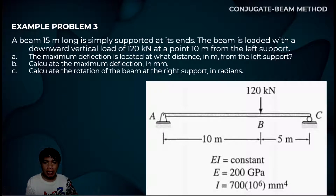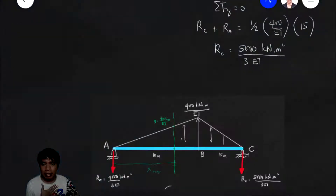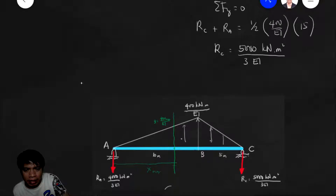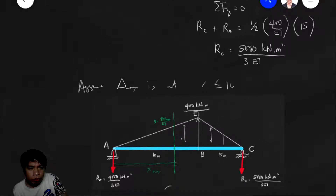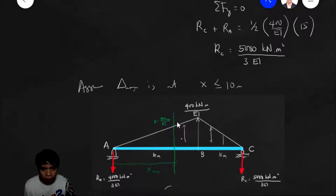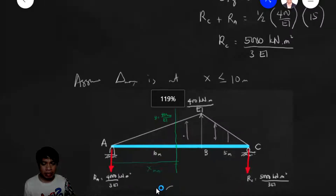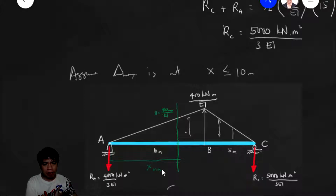We know that in the conjugate beam, shear equals the slope. We know that at maximum deflection, the slope of the tangent is equal to zero, because the tangent line is horizontal at maximum deflection. So we set the shear to zero. We cut at distance x max from the left support, where x max is the distance of the maximum deflection from the left support. By ratio and proportion, the height y at the cut is: 400/EI is to 10 equals y is to x max, so y equals 40 x max over EI.